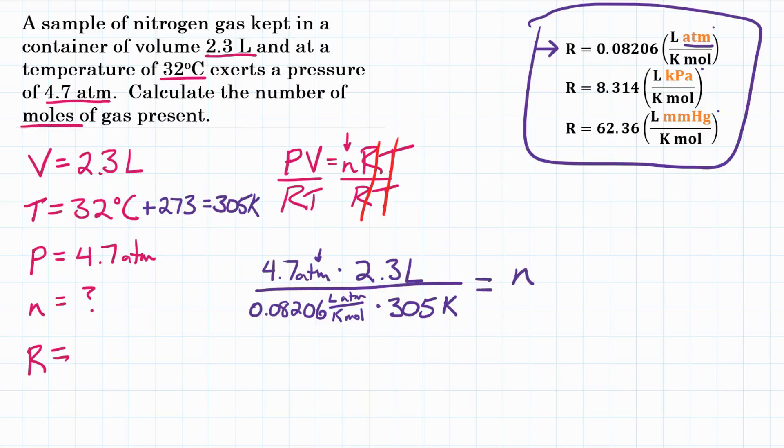And all of that equals n equals moles. So let's see if our units cancel out. We have atmospheres on top, atmospheres on bottom. We have liters on top and liters on bottom. And then since this Kelvin mole is on the bottom of the bottom of the fraction, it's kind of like it's on top. So Kelvin will actually cancel with Kelvin and we will be left with moles. So our units cancel out. That looks good. Now let's put this in our calculator to get our answer.